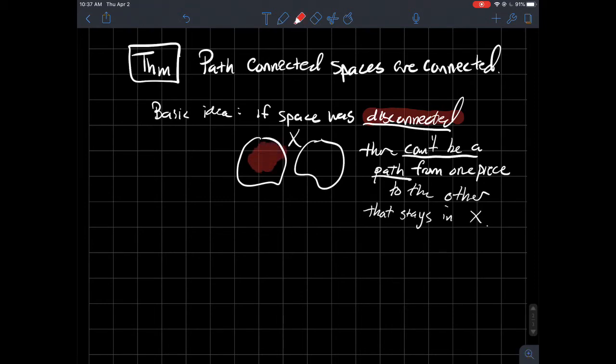So there can't be a path from one piece to the other piece. When I say piece, I mean this connected piece and this connected piece. There's no path between them that stays inside of X. So we can't be path-connected. So it's kind of the contrapositive of that theorem, if you want to think of it that way.